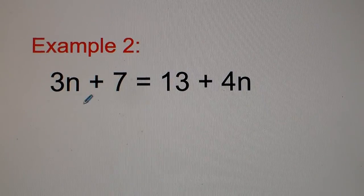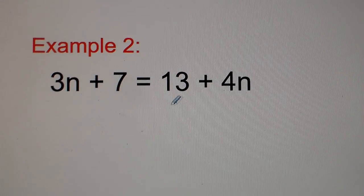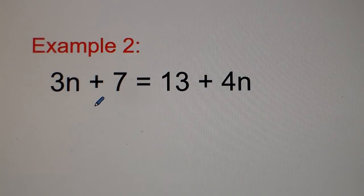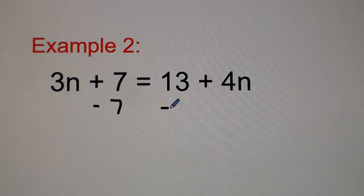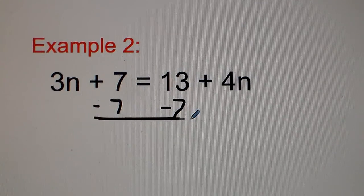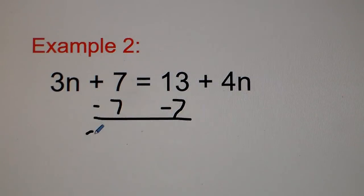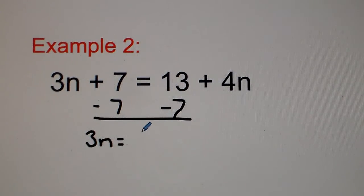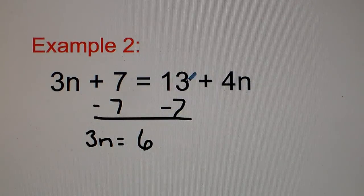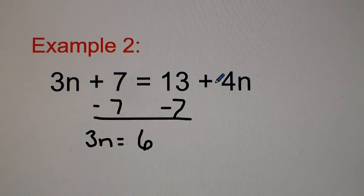Example number two: 3n plus 7 is equal to 13 plus 4n. I'm going to subtract 7 from both sides first. So we have 3n on the left side. 13 minus 7 gets us 6 — the reason I put the minus 7 underneath 13 is because those are like terms and can be combined. I carry down my plus 4n.